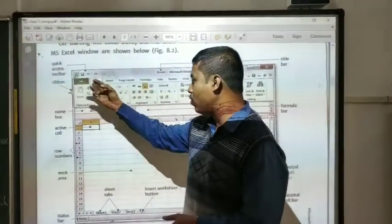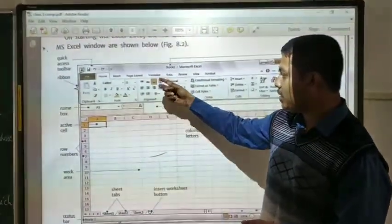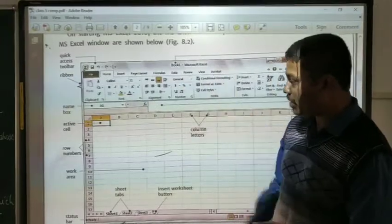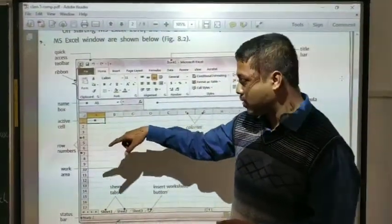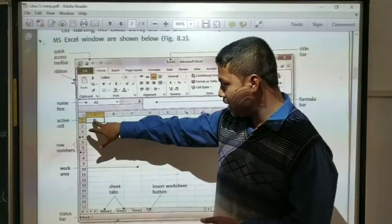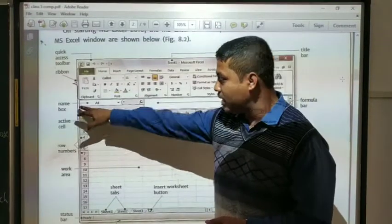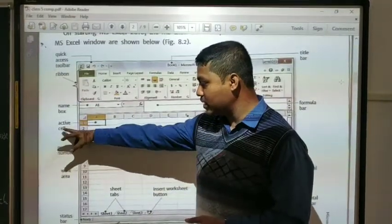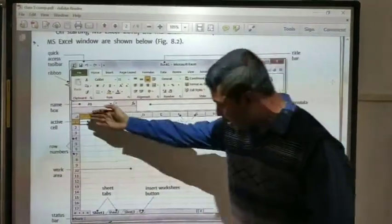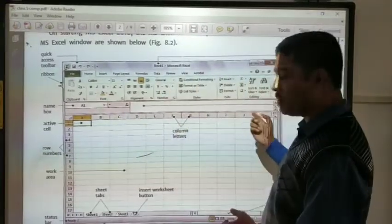In the ribbons, you will be getting File, Home, Insert, Page Layout, Formulas. So these are different types of options. Then we will be getting the name box. That means where you are present. Like if you consider here, you are clicking it, then the name box will be appearing as A1. And this yellow border occurs as an active cell.